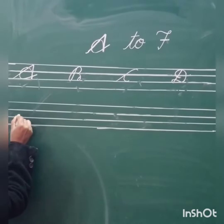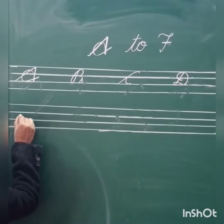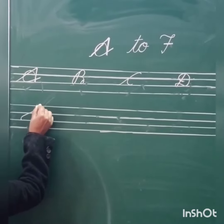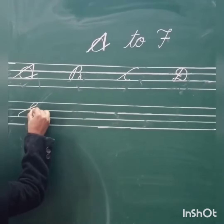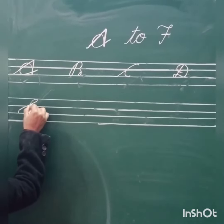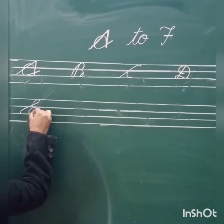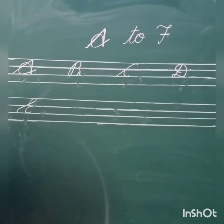Next, cursive E: tail, round, back, round — cursive E.